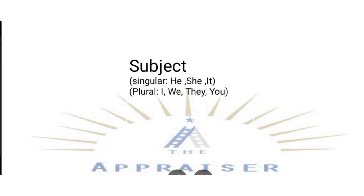The first point is Subject. What is a subject in a sentence? Subject is basically the doer which is performing the action. Subject is of two types: singular and plural. Singular subjects are he, she, it, or some singular noun. And plural subjects are I, they, you, or a plural noun.